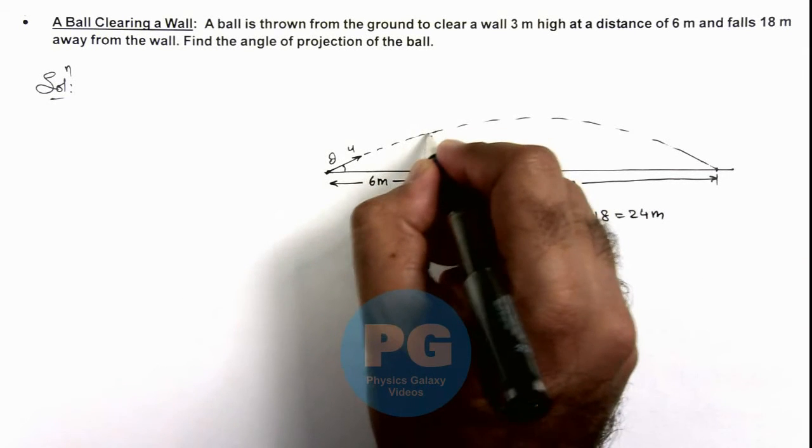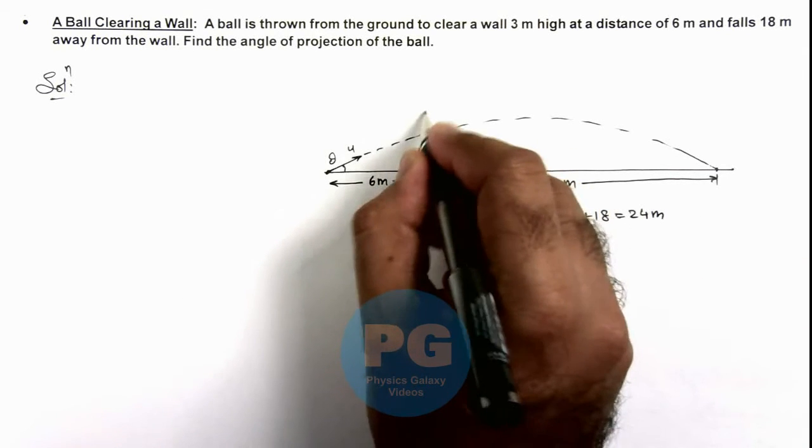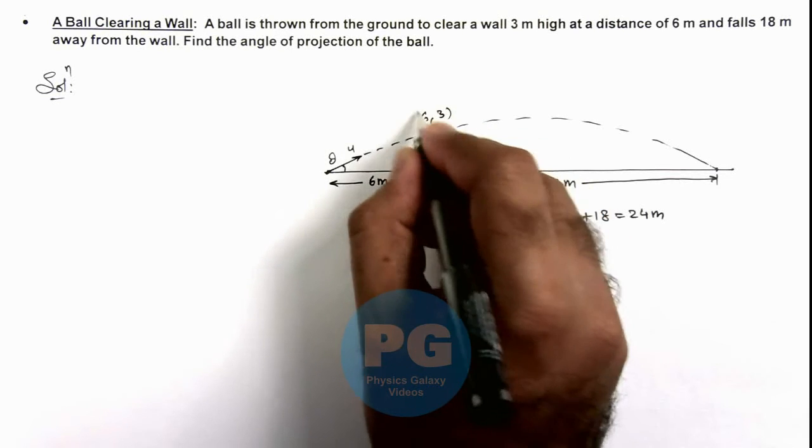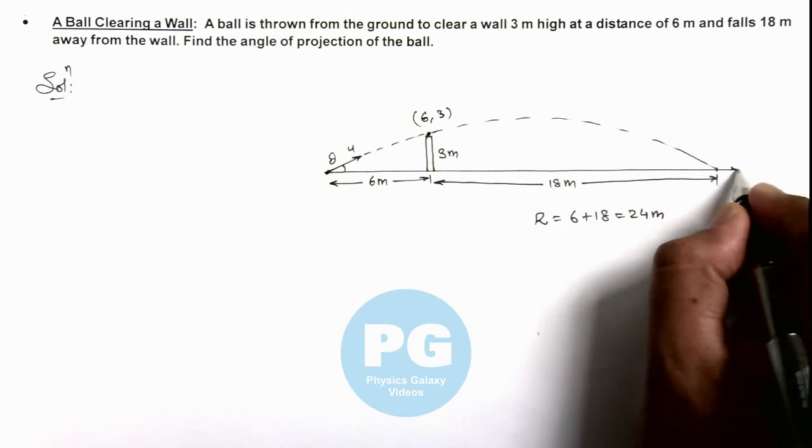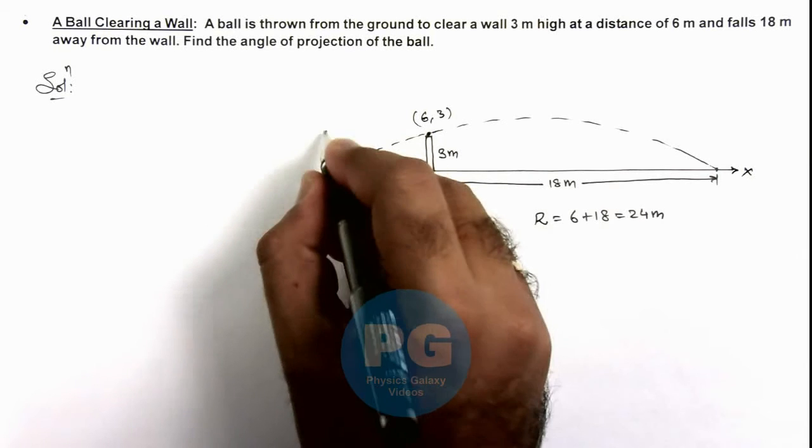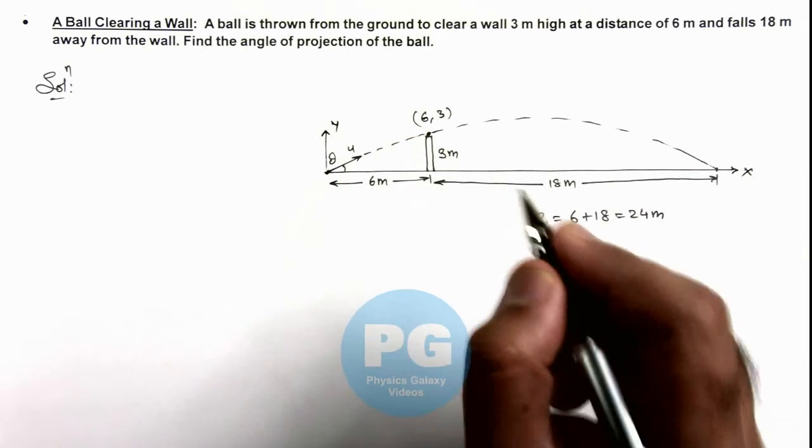And this point which is having a coordinate 6 comma 3 will satisfy the equation of trajectory if this is x axis and vertically upward is taken as y axis.